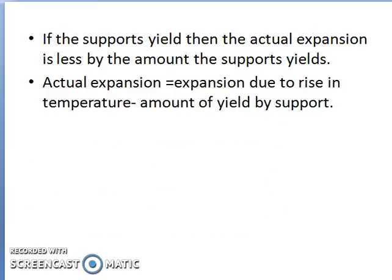Suppose the support yields, then the actual expansion will become less by the amount the support yields. So actual expansion = expansion due to rise in temperature minus the amount of yield by the support.